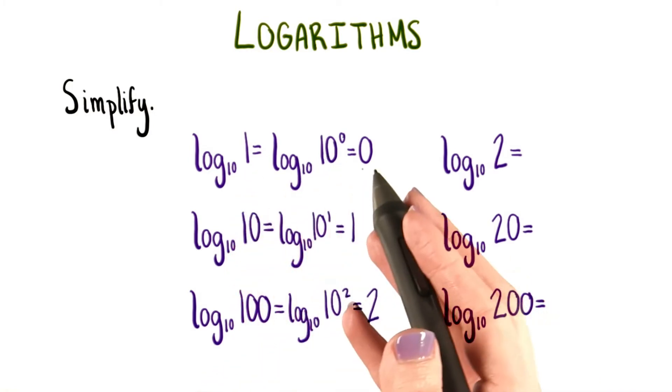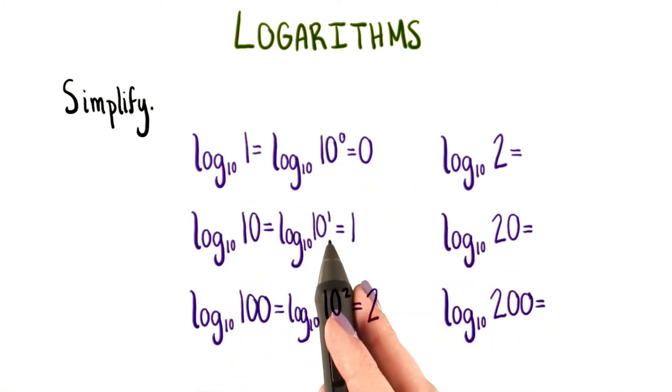1 is 10 to the 0, so that gave us 0. 10 is 10 to the 1, so taking its log in base 10 gives us 1. And log base 10 of 100 equals 2.